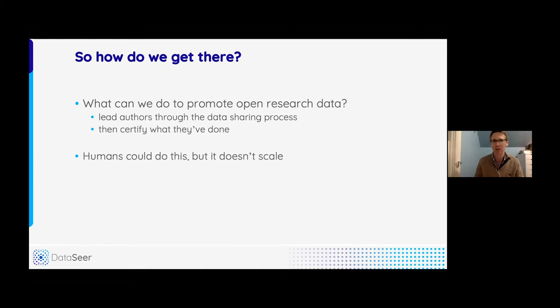go back and compare what should have been done with what the authors actually did and provide some sort of certification that they have done what we asked them to do. Human beings can do this. Data curators are around at plenty of journals and in other contexts too, but it's not an easy job. It takes 20 to 40 minutes per article, involves a lot of back and forth, and so it's very hard to scale up to tackle the millions of articles that we would need to do to really produce a body of literature every year that is backed up by research data.